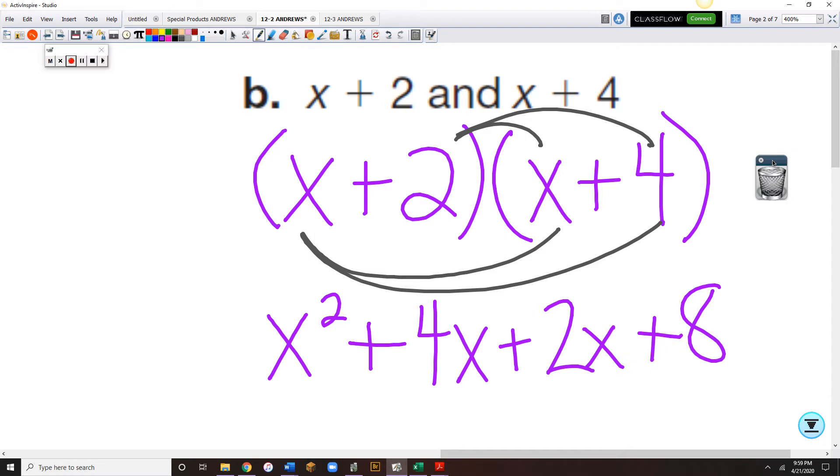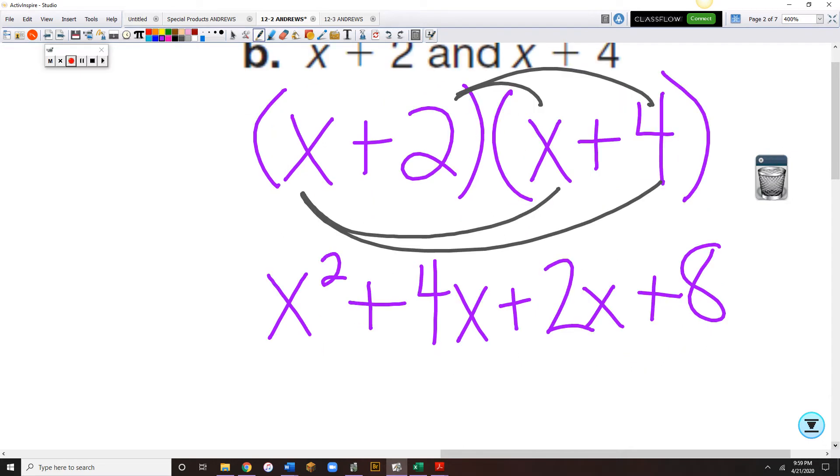Plus 2x plus 8. And then we'll need to combine our like terms in the middle. So x squared plus 6x plus 8.